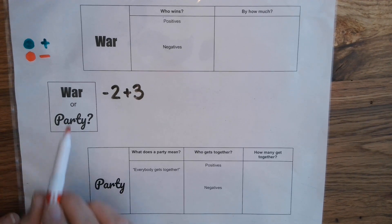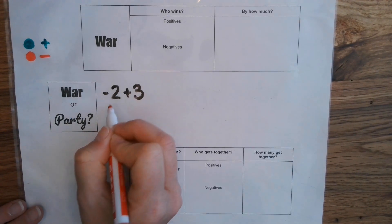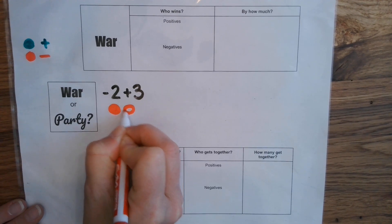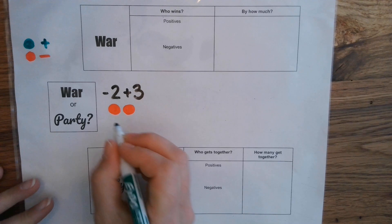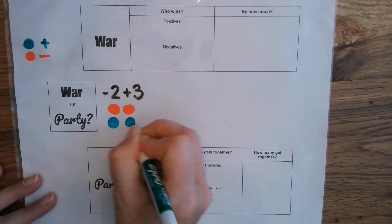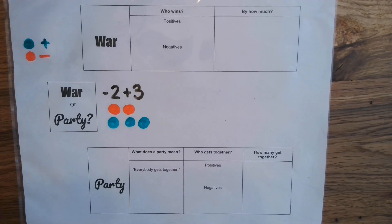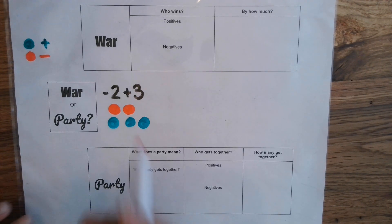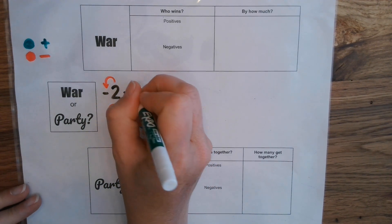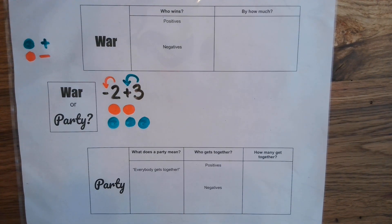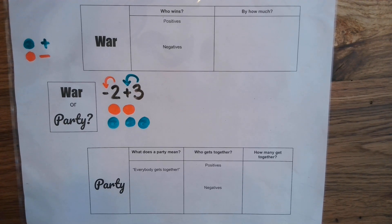I don't have integer chips here with me, so I'm going to use red dots for my negatives and green dots for my positives. We need to decide: is this a war or is this a party? We have two red ones — two negatives — and three positives. We have negative two and positive three. Remember, addition and positive use the same symbol, so we look at that three as a positive.